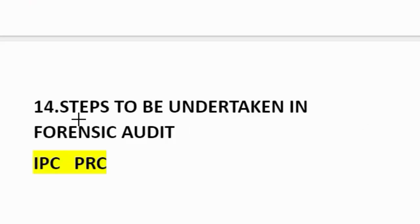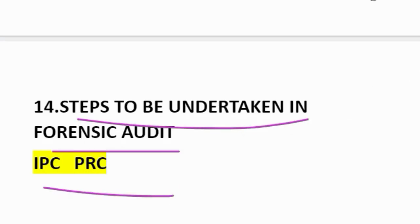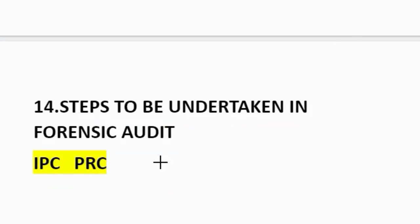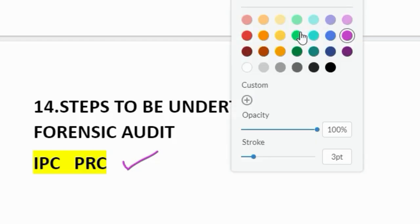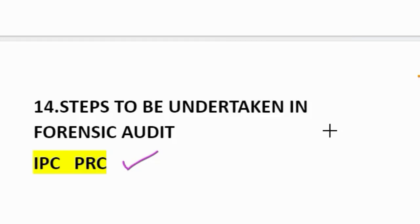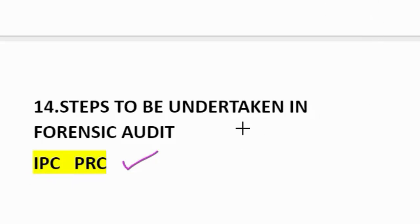Fourteenth question: steps to be undertaken in forensic audit. How to remember? IPC PRC — IPC meaning Indian Penal Code. I for initialization, P for planning the audit, C for collection of evidences. IPC completed. Then PRC: P for performing analysis, R for reporting, C for court proceedings.